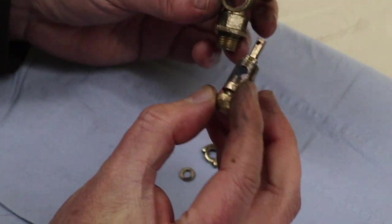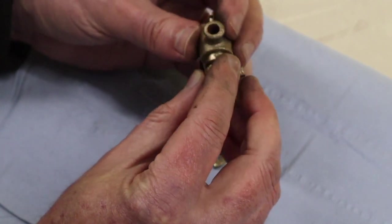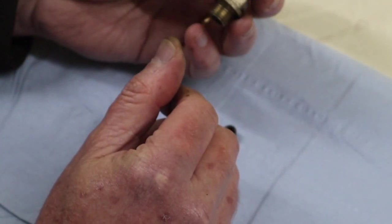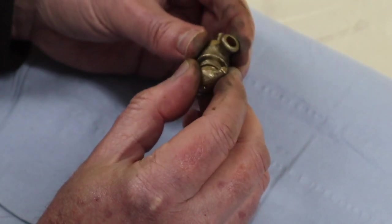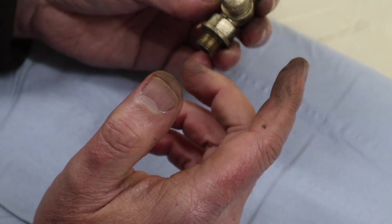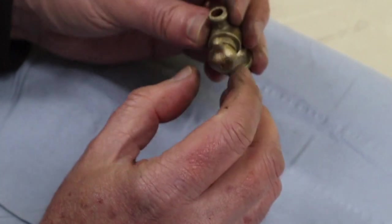Now, obviously the way this works, that sits inside there. When the holes line up, it allows the water to come out. And when you turn it that way, basically 90 degrees, then it should lock or block the flow of the water.